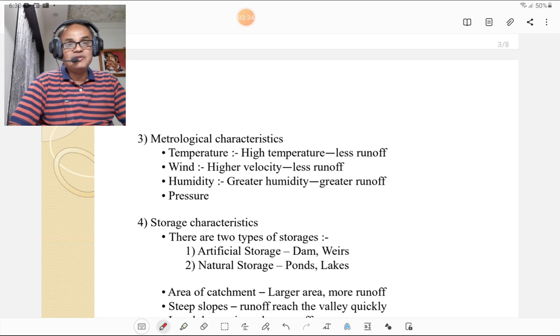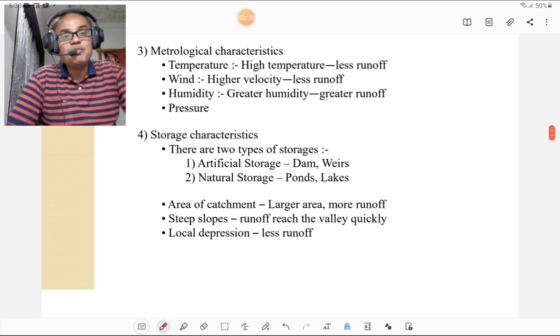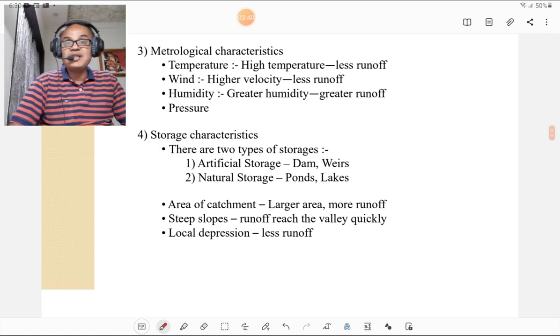Then storage characteristics. There are two types of storages. First is the artificial storage such as dams and weirs, and second is the natural storage such as ponds and lakes. Then area of catchment. Larger will be the area, more will be the runoff. For steep slopes, runoff reaches the valley very quickly. Local depressions, less runoff. That is more important.